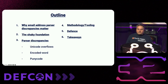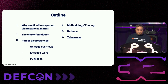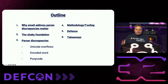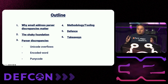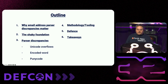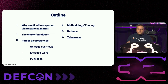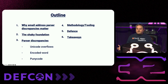First, I'll explain why email address parser discrepancies matter. Next, I'll cover the shaky foundations that emails are built on. The core of the talk will focus on parser discrepancies, including Unicode overflows, encoded Word, AMP Unicode, all with real-world case studies. Then I'll share my methodology and tools for automating exploitation, followed by advice on defense. I'll conclude with the key takeaways, leaving five minutes for questions. There's also bonus material for DEFCON.